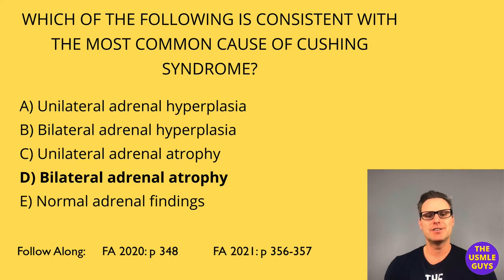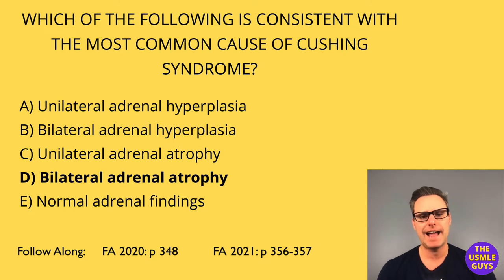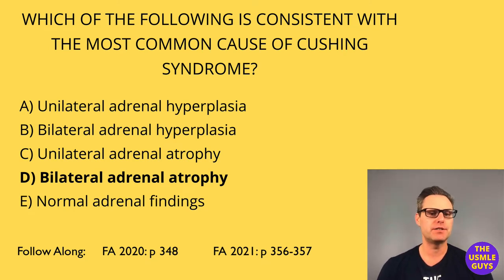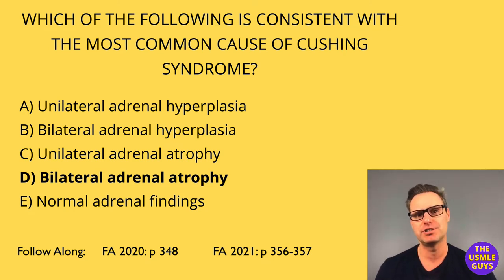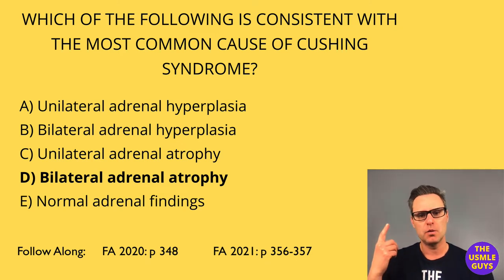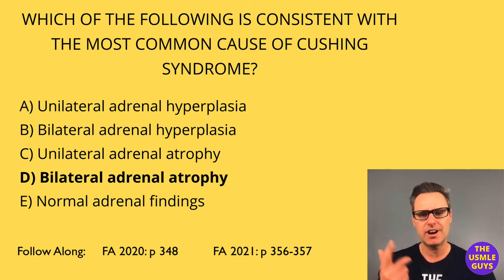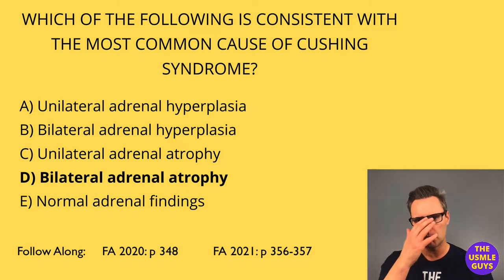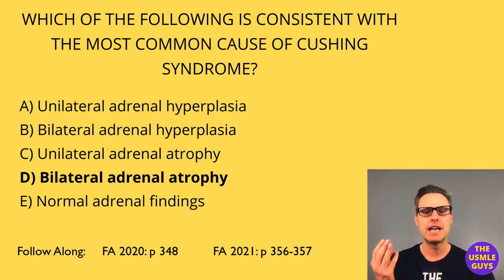The correct answer here is D, bilateral adrenal atrophy. Cushing syndrome is usually fairly obvious by characteristic physical changes: striae, buffalo hump, truncal obesity, moon facies, and hirsutism.